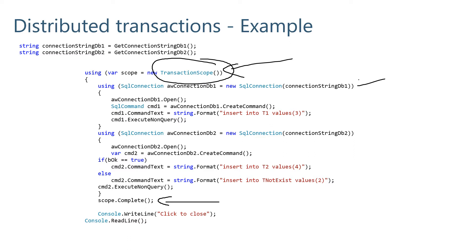So we have this first connection where we are going to run an insert, and in the second connection — just for demo purposes — depending on a boolean value we have here, whether it's true or not, we are going to update one existing table in the secondary database, or we won't. It's just to show you how the process will run.